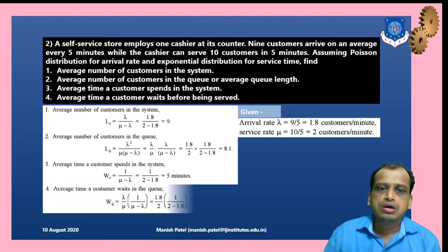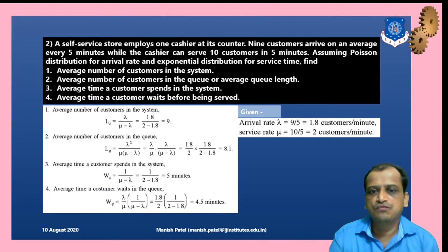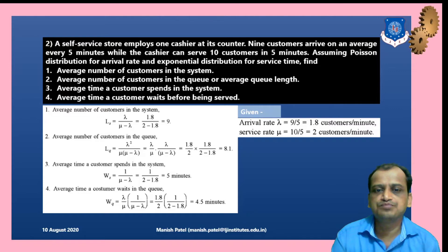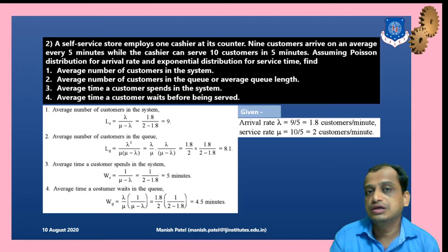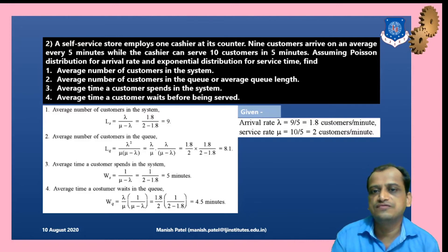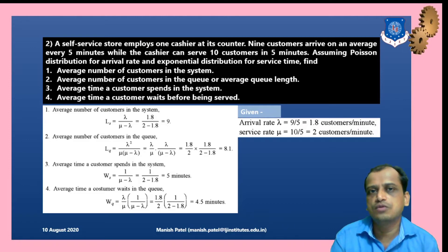The customer waits a total of 5 minutes — waiting in the queue plus being served. For average time a customer waits in the queue: Wq = λ/[μ(μ − λ)]. Putting in the values gives Wq = 4.5 minutes waiting in the queue and 0.5 minutes (30 seconds) in service, totaling 5 minutes in the system as found earlier.